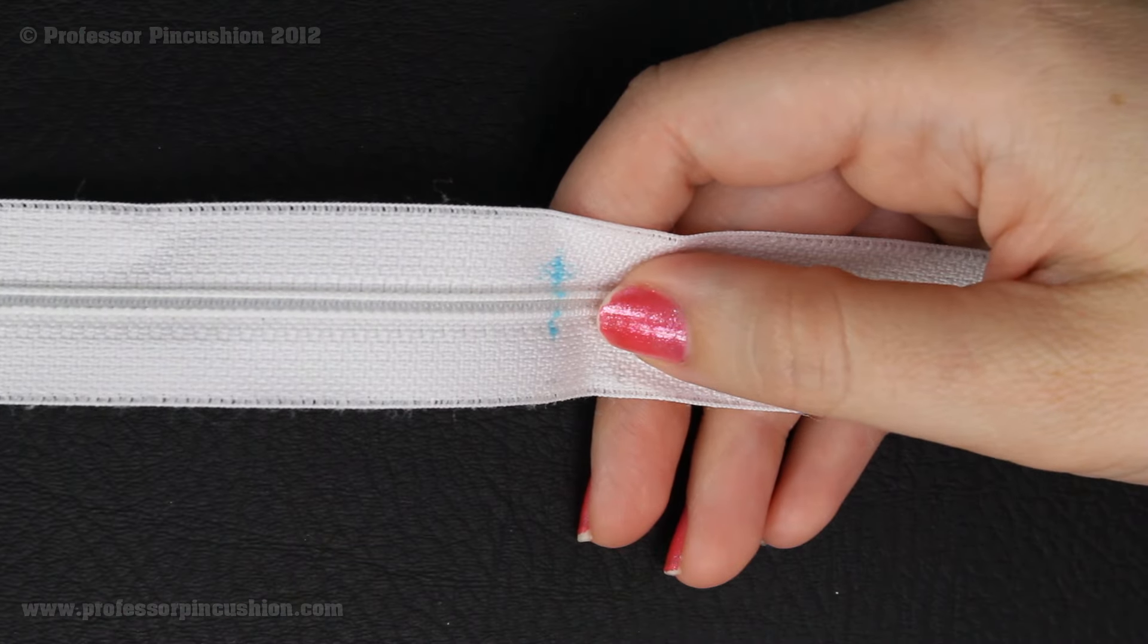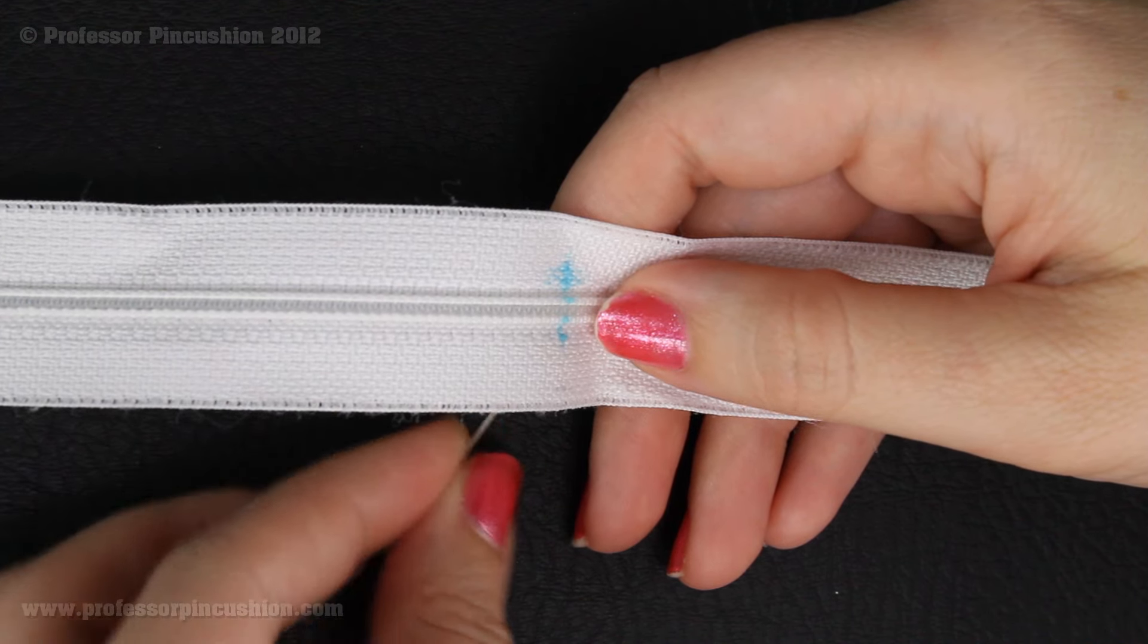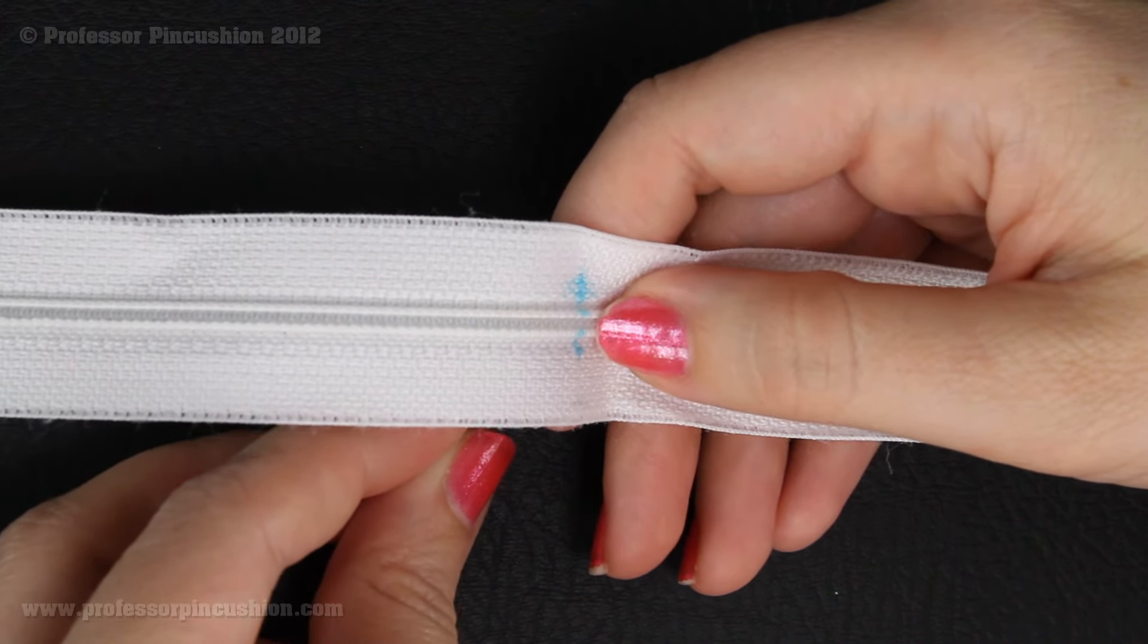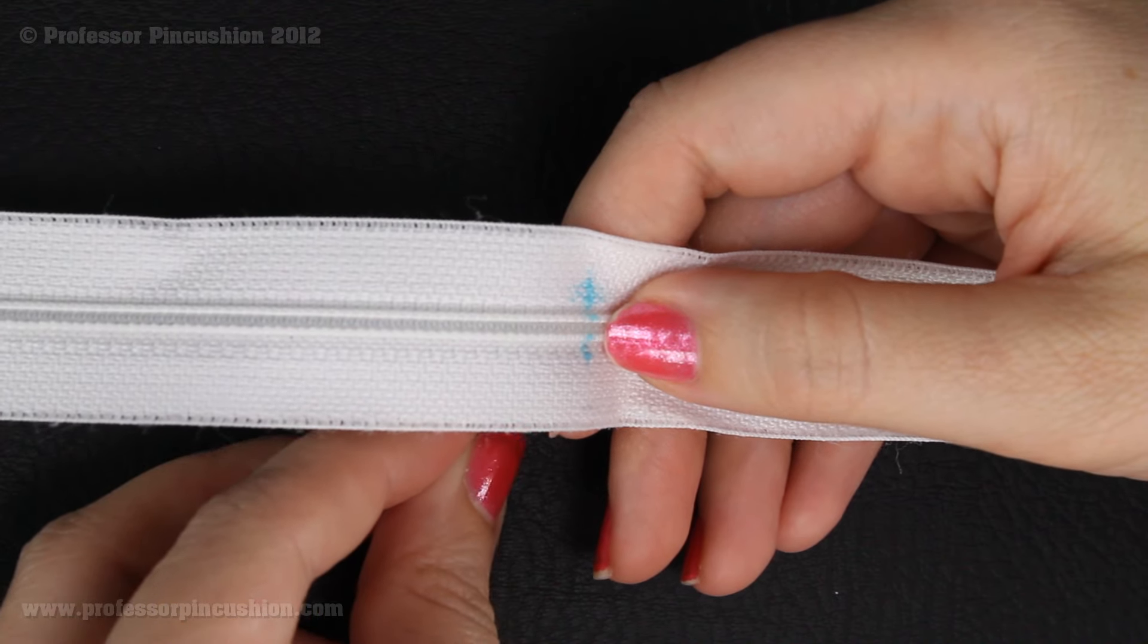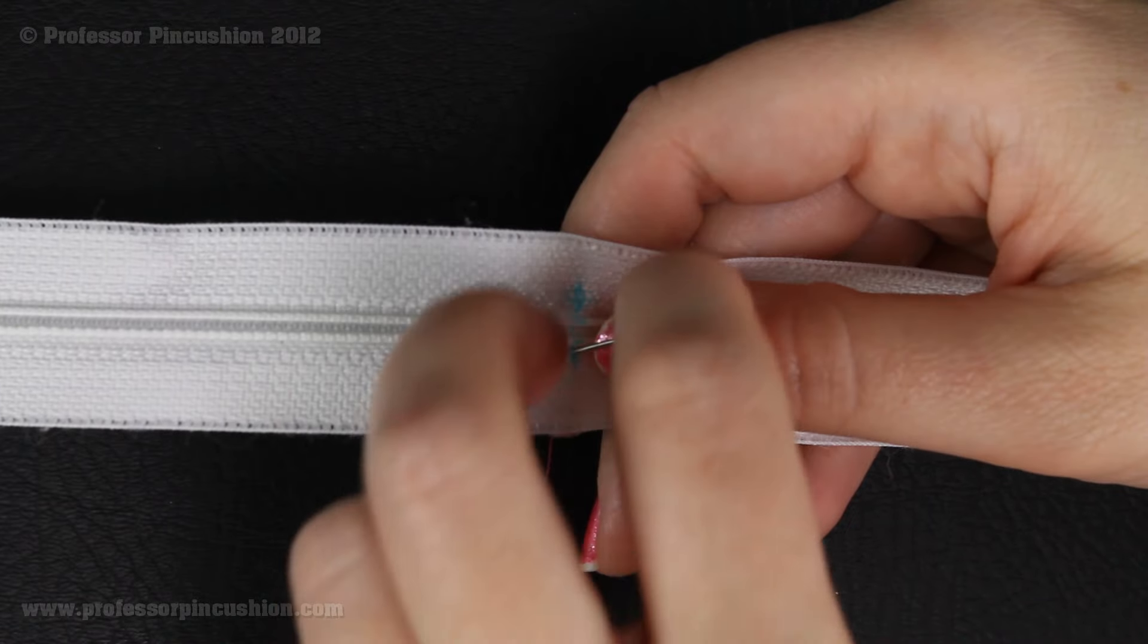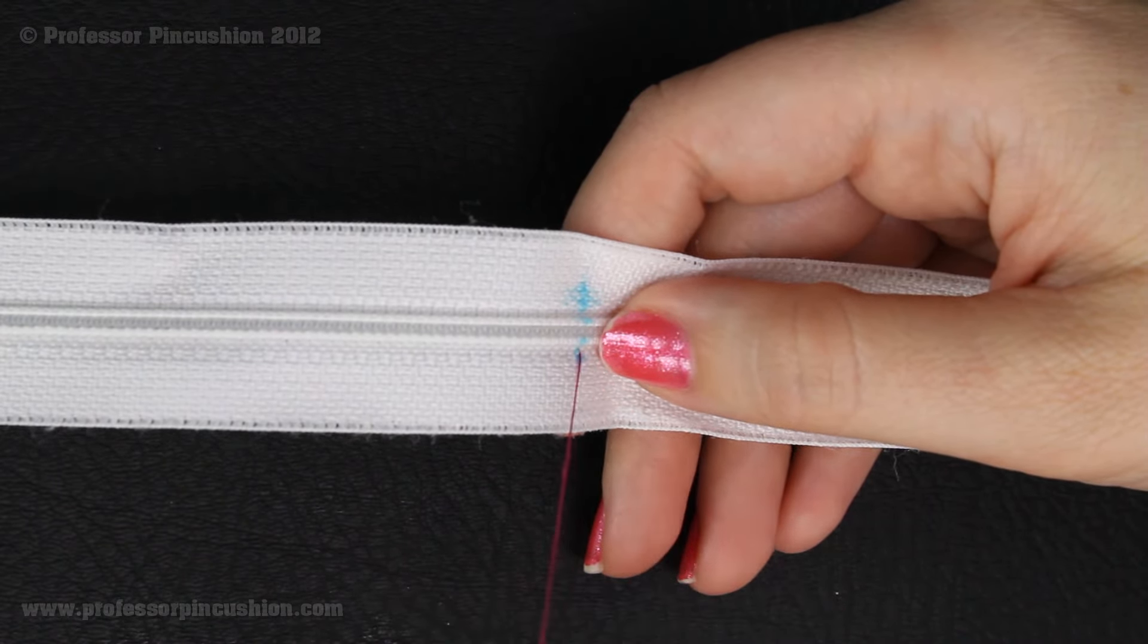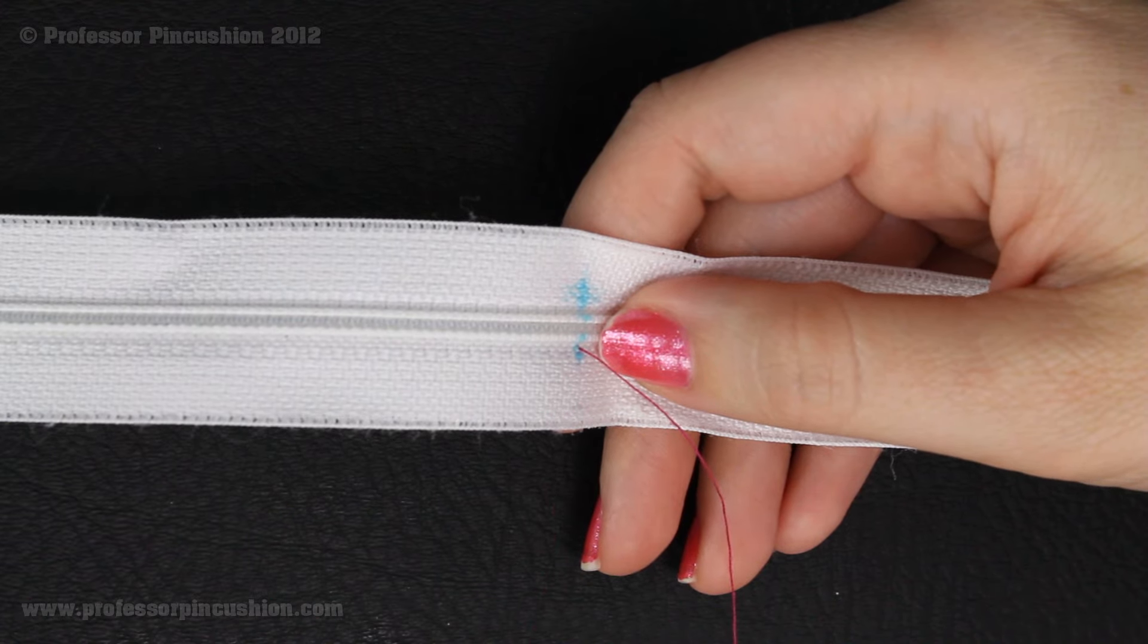The right side of my zipper is facing up and I have my threaded needle here with the knot on one end. I'm going to come up from underneath so my knot is hidden on the back of the zipper, and I'm coming up right alongside one side of the teeth. Normally you're going to want to use a matching thread color, but I'm just doing bright pink so it'll be easier for you to see.